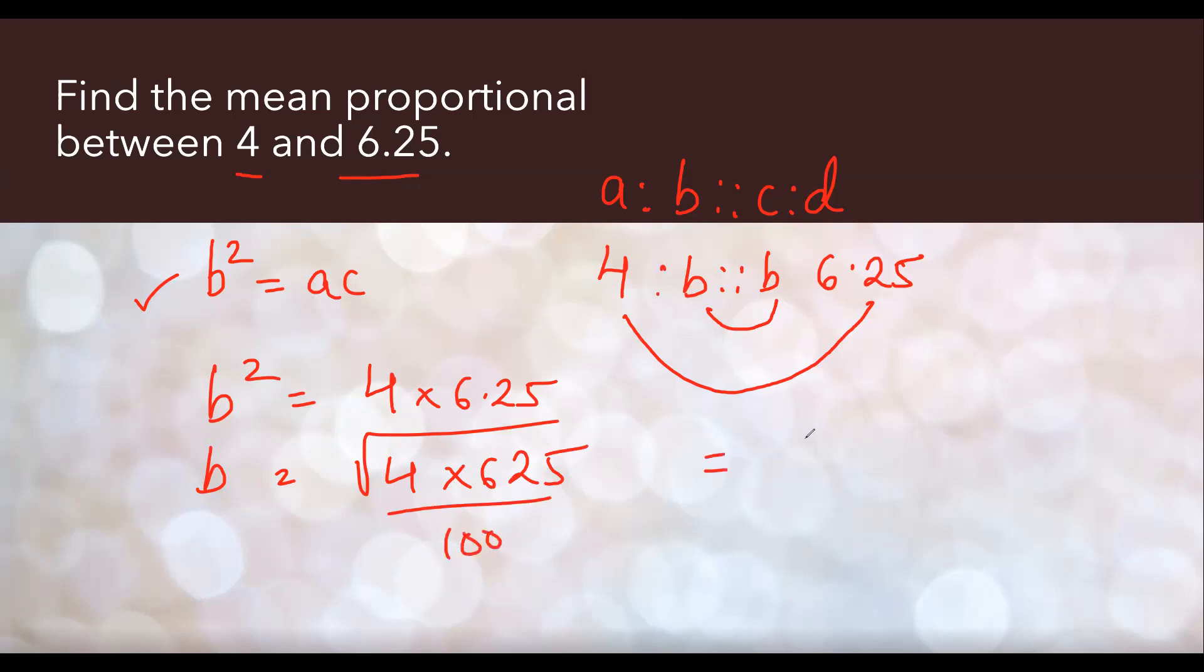Under root of 4 is 2. Under root of 6.25 is 2.5. Under root of 100 is 10. 2 into 25 is 50. 50 by 10, which is going to give you 5 as a mean proportion between 4 and 6.25. I hope you understand this question and concept.